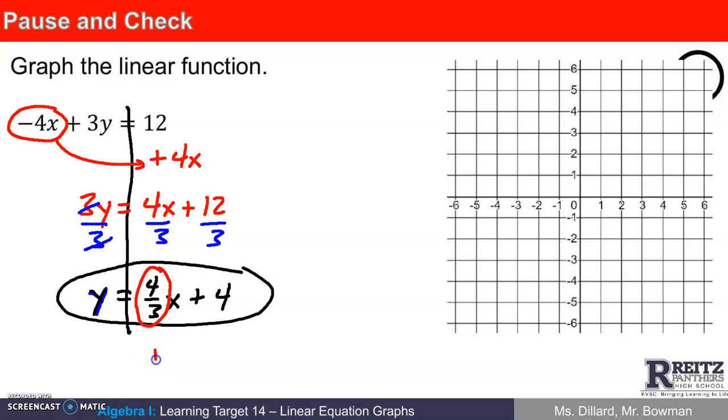My slope is 4 thirds. Think of rise over run. My y-intercept is 4, so I can find the point on the y-axis at 4. I know the slope is 4 thirds, that would be up 4 and right 3, or down 4 and left 3. Down 4 and left 3.